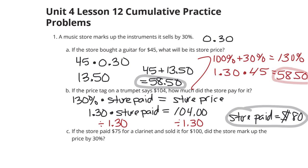If the store paid $75 for the clarinet and sold it for $100, did the store mark up the price by 30%? Two ways of attacking this question. We could say, well, our 130% multiplied by 75 will tell us whether or not it was truly marked up the correct percent. You multiply these together and you get $97.50. So, it's a simple answer of no.